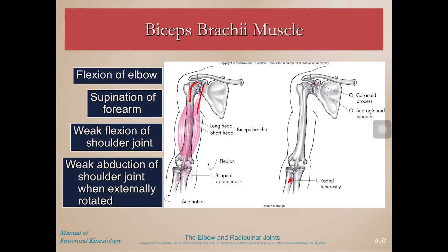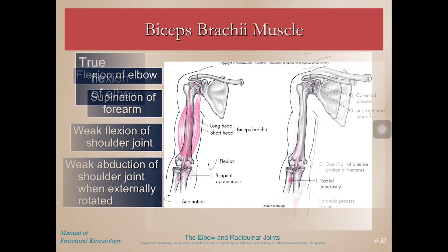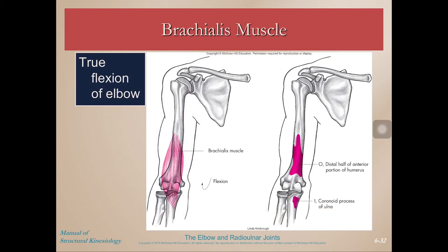The biceps can also weakly abduct the shoulder joint if you're externally rotated. Think about external rotation at the shoulder — now my bicep, because it crosses the shoulder, if I shorten my bicep the line of pull is going to actually help me abduct my shoulder joint. Brachialis is just a true elbow flexor. It's underneath the bicep — deep to it — and all it does is elbow flexion.